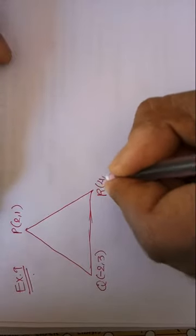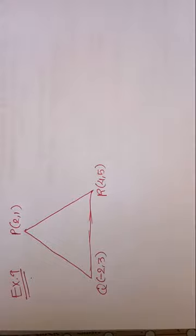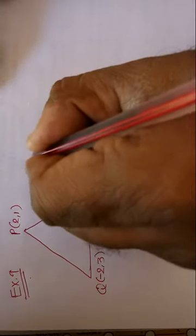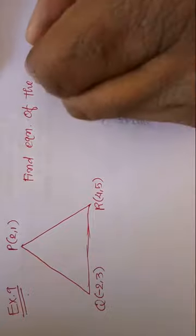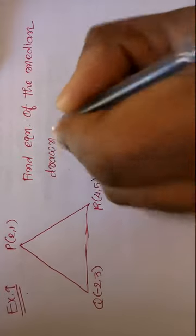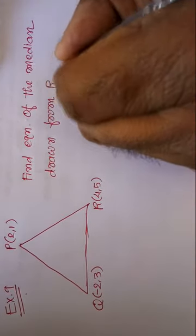A triangle is given with its vertices. The vertices are P(2,1), Q(-2,3), and the third vertex is R(4,5). Our question is: find the equation of the median drawn from R(4,5).